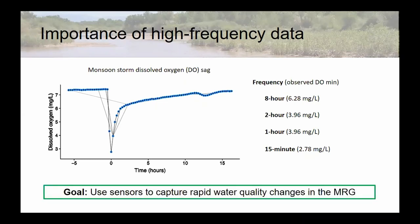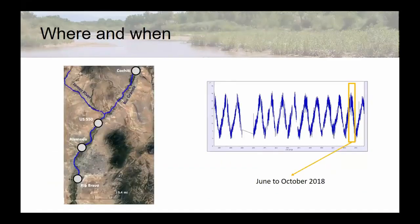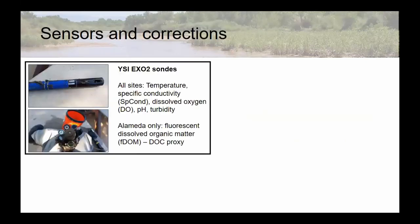Our goal is to use sensors to capture rapid water quality changes in the middle Rio Grande. I'm mostly going to be talking about Alameda today, with a little bit of data from US 550, COCHI, and Rio Bravo. We have a really nice long-term record, but I'm only talking about the 2018 monsoon season — June to October — just a tiny blip of this time series. In terms of sensors, Dave already mentioned we use YSI EXO2s or EXO1s. All sites have temperature, conductivity, oxygen, pH, and turbidity.